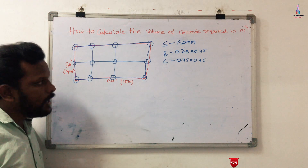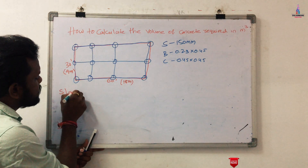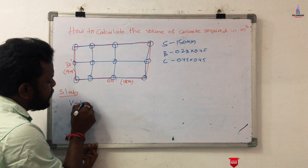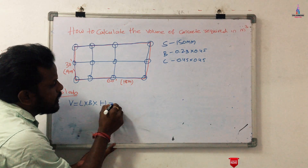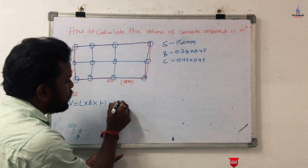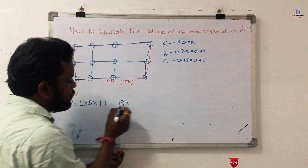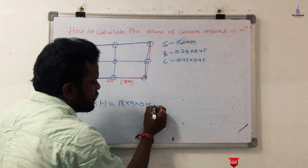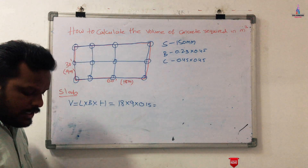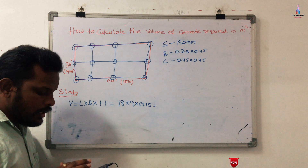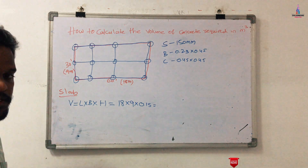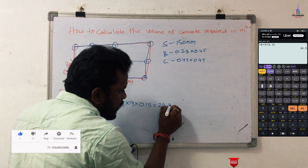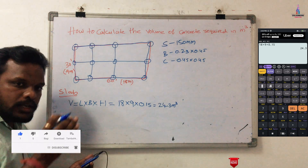Starting with the slab section. The volume of concrete for the slab uses the formula V = L × B × H, where length is 18 m, width is 9 m, and height (slab thickness) is 0.15 m. Calculating: 18 × 9 × 0.15 = 24.3 cubic meters. This is the volume of concrete required for the slab section in wet condition.